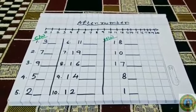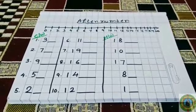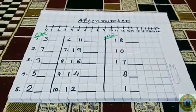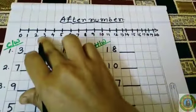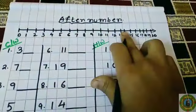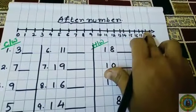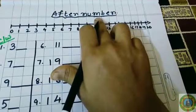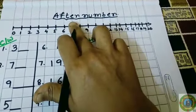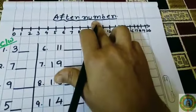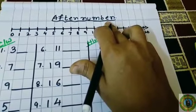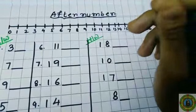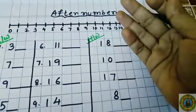Today we will do after number with the help of a number line. I have drawn a number line. Today we will learn after number. What is after number? After number means forward counting or next number.